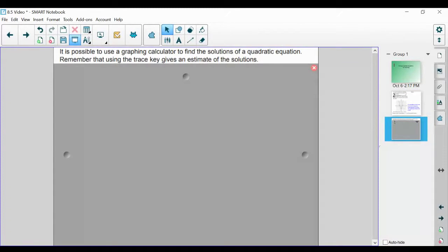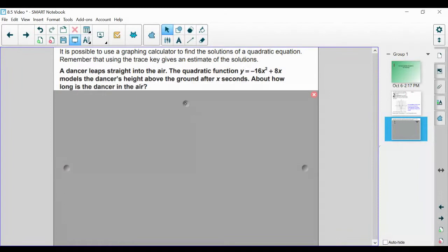It is possible to use a graphing calculator to find the solutions of a quadratic equation. Remember that using the trace key gives an estimate of the solutions. Let's talk about how we would use it on paper to get a sense of how to use it before we physically are able to use one.